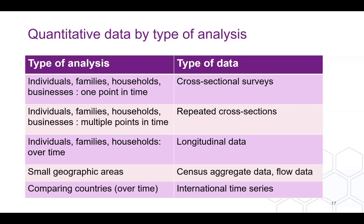Understanding Society is part of a longitudinal dataset taken during COVID — there were seven waves inviting the same people to complete the questionnaire, so you could look at change over time. We also have data covering small geographic areas: census aggregate data and flow data. And we have international time series datasets like the World Bank dataset, which is collected from countries over time, probably going back to around 1960.